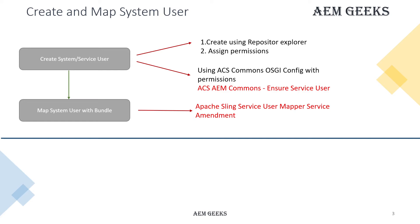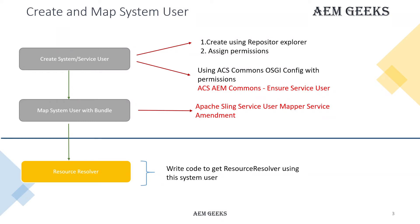Creating the user and mapping it to a bundle are one-time activities. Once done, every time you need it you write code to get a resource resolver — either inline each time or via a reusable function. It is always a good idea to have a utility function so that every time you call it you get a resource resolver using that service user.